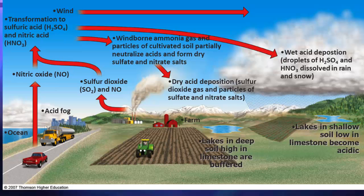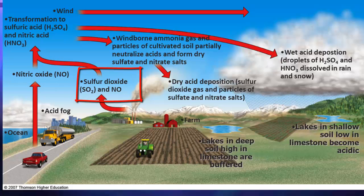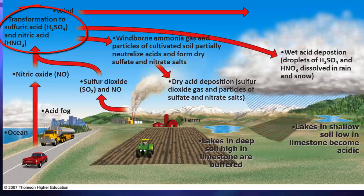Acid deposition originates from sulfur dioxide and nitrogen oxide particles that come from the burning of fossil fuels, like nitric oxides produced from gasoline-powered automobiles and sulfur dioxide and nitrous oxide from the burning of coal in power plants. Once these particles are emitted into the air, they're going to form sulfate and nitrate particles, which can travel long distances on wind currents.